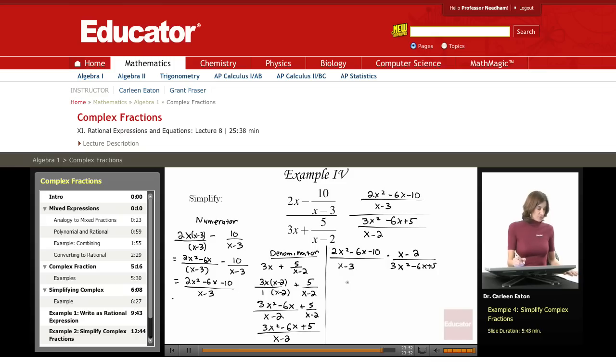Next thing is to do some factoring, see if I can simplify this. Because we've got a lot of expressions here. Well, this could be, 2 could be factored out. 2x squared minus 3x minus 5 times x minus 2 divided by x minus 3 times 3x squared minus 6x plus 5. So I was able to pull that 2 out.